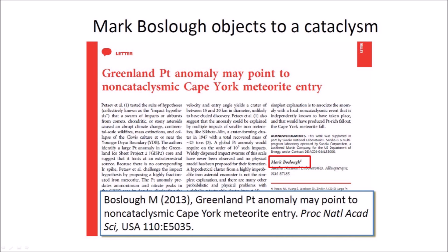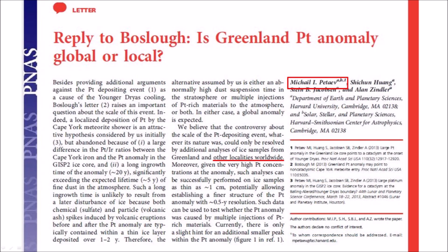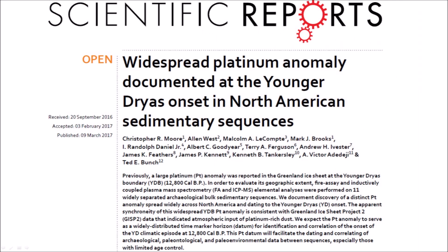Mark Boslow, who had argued the chance of an impact at the time of the Younger Dryas was infinitesimal, objected to the platinum anomaly and proposed it could result from a local, non-cataclysmic event such as the entry of the Cape York meteorite — an iron meteorite from western Greenland with a total recovered weight of 58.2 tons. Petayev and co-authors defended their results, saying the controversy could only be resolved by additional analysis of other localities worldwide. Christopher Moore and ten members of the Comet Research Group then analyzed 11 widely separated archaeological sequences and found the platinum anomaly distributed across North America at the Younger Dryas boundary.